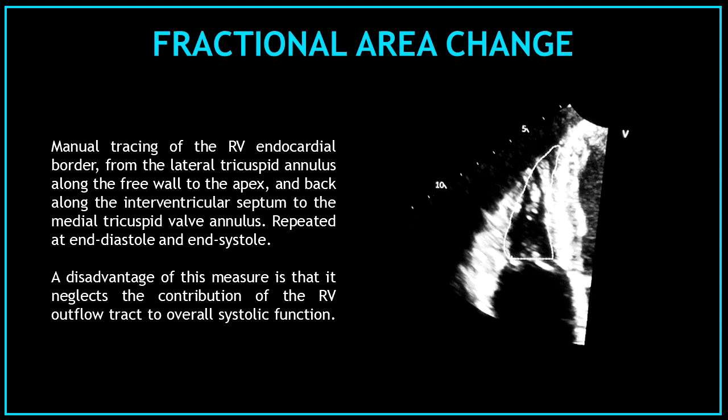The fractional area change involves manual tracing of the right ventricular endocardial border from the lateral tricuspid annulus along the free wall to the apex, and back along the interventricular septum to the medial tricuspid valve annulus, repeated at end-diastole and end-systole. A disadvantage of this measure is that it neglects the contribution of the right ventricular outflow tract to overall systolic function.